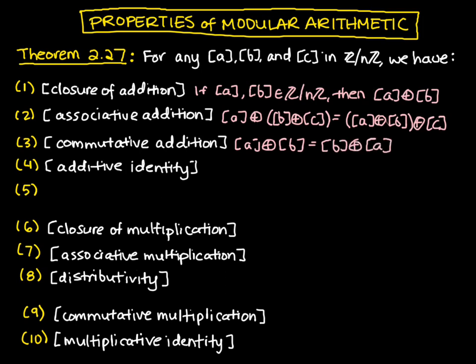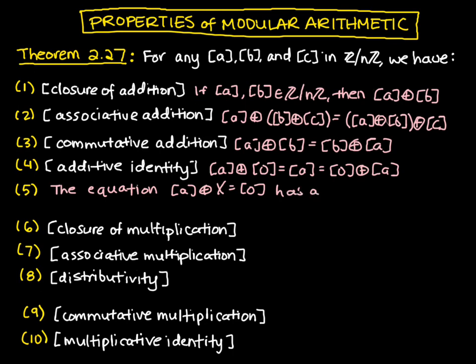We have an additive identity element. So that tells us there's a zero, so that a plus zero is equal to a is equal to zero plus a. And we also know, following up on this last point, the equation a plus x equals zero has a solution in Z mod nZ for every a that's in that set.